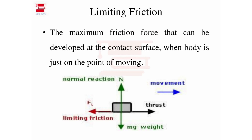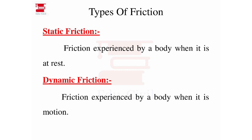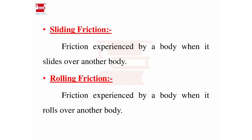Now let's go to the next term — the types of friction. We have four types of friction. The first one is static friction: friction experienced by a body when it is at rest. The second is dynamic friction: the friction experienced by the body when the body is in motion.